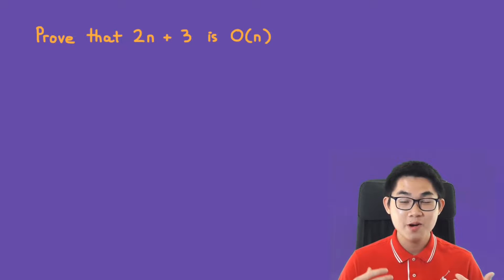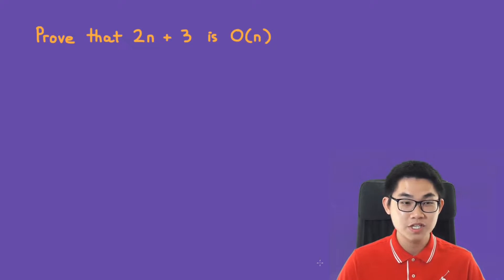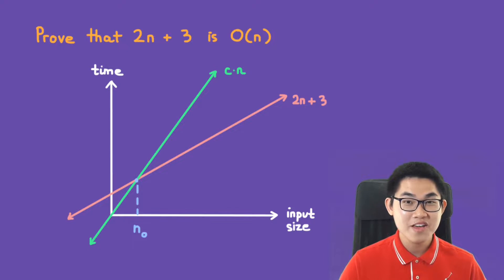In this video I'm going to show you how to prove or disprove Big O. We're going to start off with this problem: prove that 2n plus 3 is O(n).